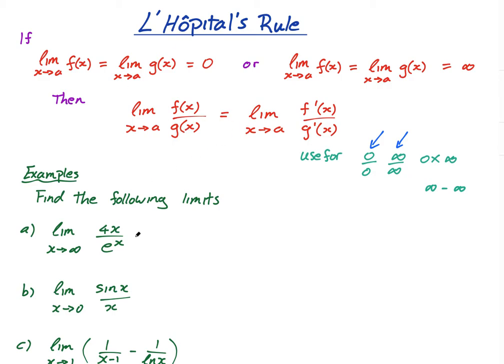Imagine we have 4x over eˣ and I want to find the limit as x approaches infinity. To understand this intuitively, imagine x is a hundred. The numerator is 400. But e to the power of a hundred is an absolutely massive number. So this denominator is approaching infinity way, way faster than the numerator.